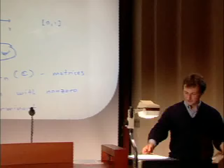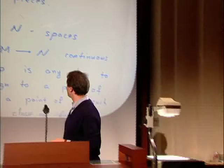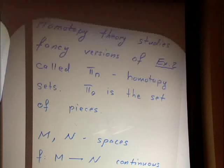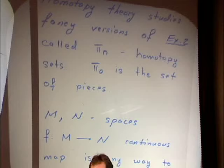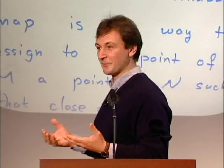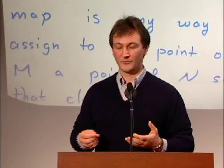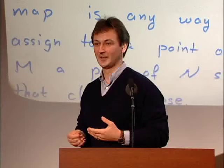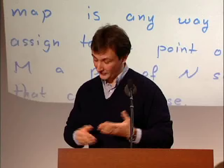So what is homotopy theory about? Let's call pi zero of a space the set of its pieces. So if a space has two pieces, then pi zero is a set of two elements. It's typically much more finite than the space itself. What homotopy theory does is study some fancy versions of this invariant, called higher homotopy sets. I will try to explain how one gets to pi_n, where pi_n will be some set for any non-negative integer n, starting from pi zero.